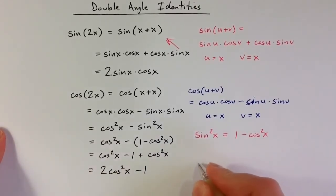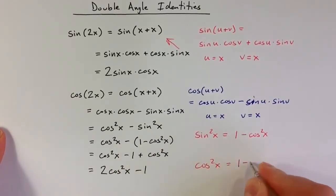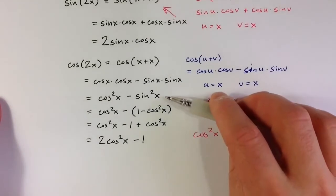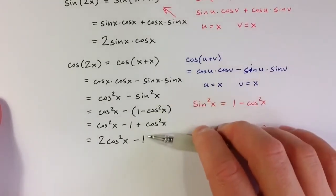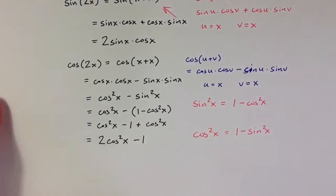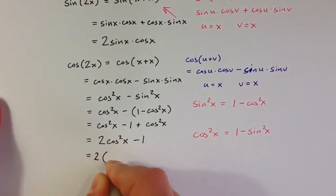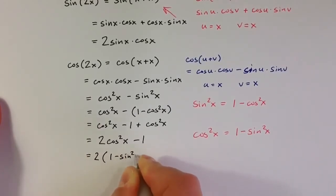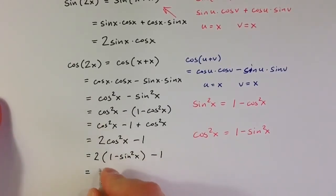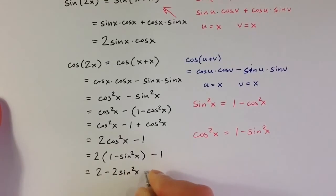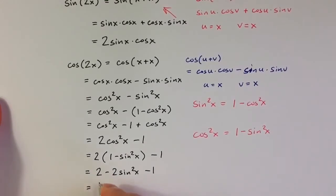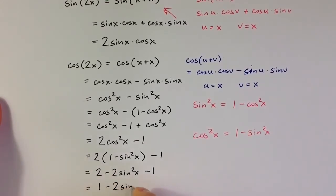In a similar way, we can think of cosine squared x as equal to 1 minus sine squared x. Replacing cosine squared with 1 minus sine squared x and distributing gives 2 minus 2 times sine squared x minus 1. Combining the constants, we get 1 minus 2 times sine squared x.